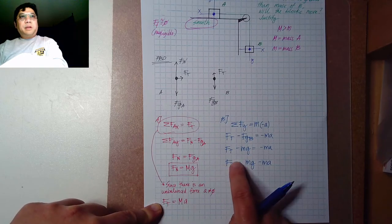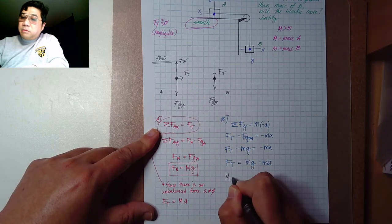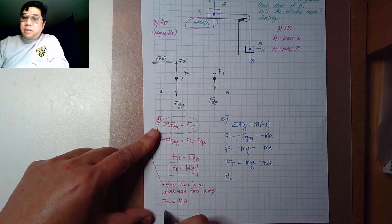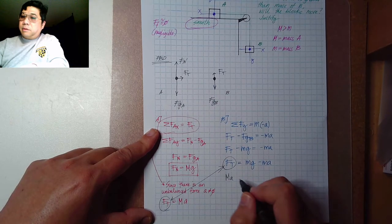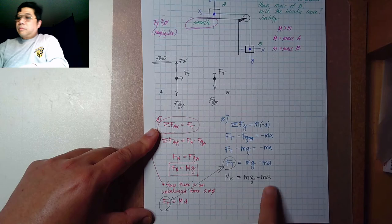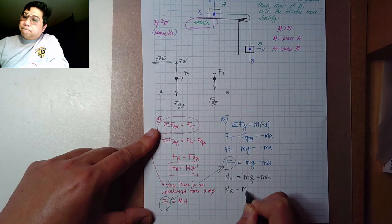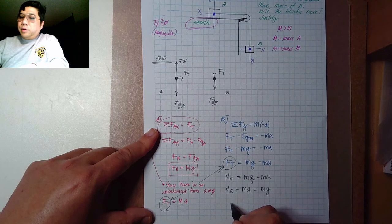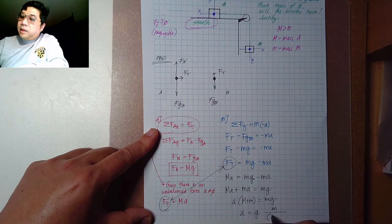Now let's equate the two expressions to prove acceleration is not zero. We have Ft equals Ma from block A, and rearranging block B's equation: Ft equals mg minus ma. Setting them equal: Ma equals mg minus ma. Combining the acceleration terms: M times a plus m times a equals mg, so (M plus m) times a equals mg. Therefore, acceleration equals mg divided by (M plus m). This confirms acceleration is not zero.